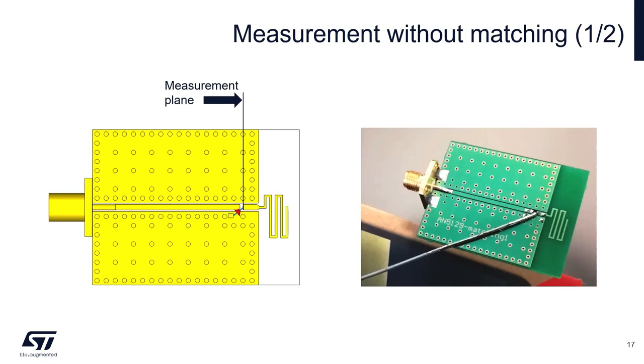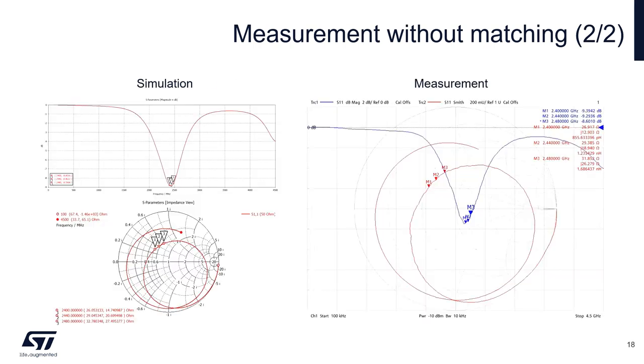At first we can measure impedance of the antenna without the matching network. There are many variants how to do it. In the simulation we place the port here. In case of measurement we place the semi-rigid pigtail on the board. In this slide we can see the results of the simulation and the measurement. We can see the return loss and the impedance. Markers are placed at the beginning, middle and end of the BLE band. The simulation and measurement results are quite close. From the Smith chart we can see that the impedance can be improved. This can be done in the matching network.